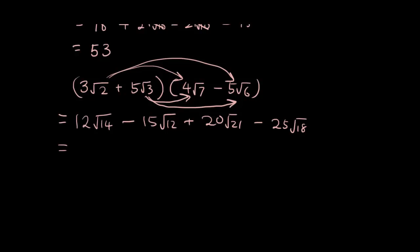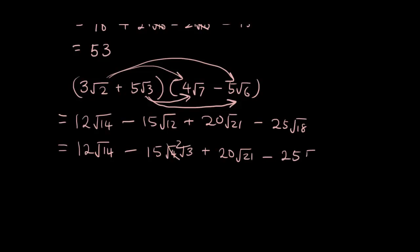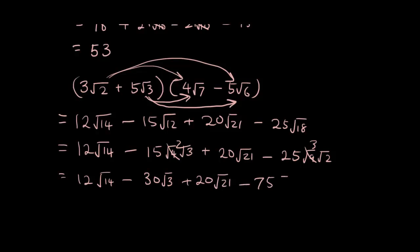I need to check whether any of these square roots can be simplified. I can simplify √12 into √4 × √3, so that 4 changes to 2, giving −30√3. And √18 simplifies into √9 × √2, so that's ×3, giving −75√2. The final answer is 12√14 − 30√3 + 20√21 − 75√2. Feel free to comment if you see a mistake. Have a good one guys — hopefully see you in the next surds tutorials. Thanks for watching, bye! Also happy new year.